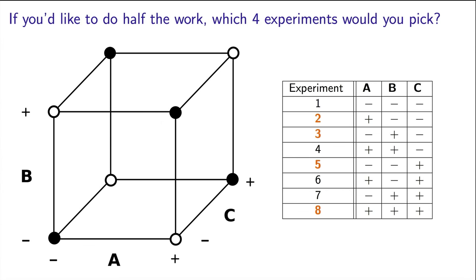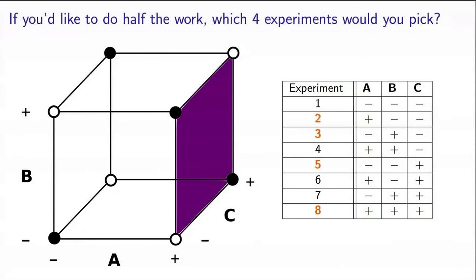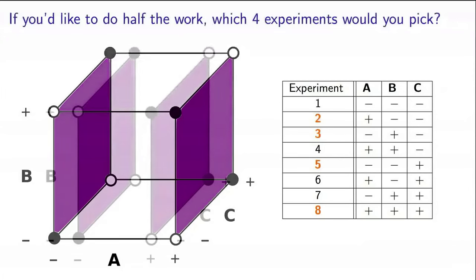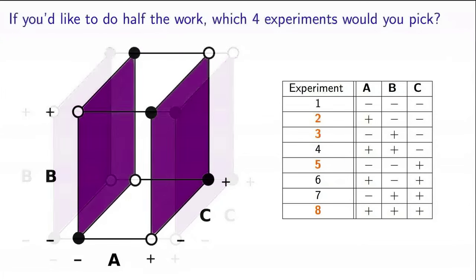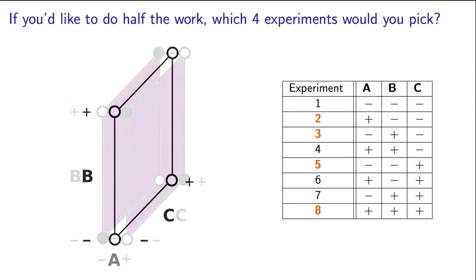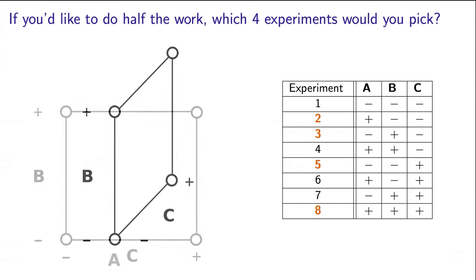Another way of saying that is that factor A could have been at the minus level or at the plus level, and it really wouldn't have affected our outcome variable much. If A can exist at two levels and not really affect our outcome, that means that we can collapse the minus and the plus layers together, and notice then what happens.